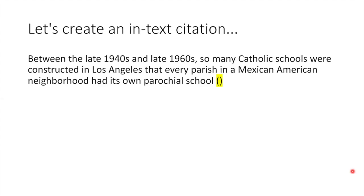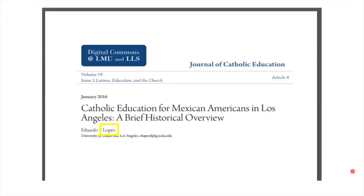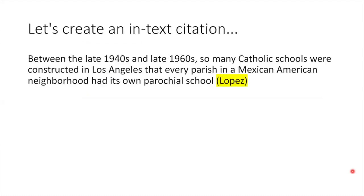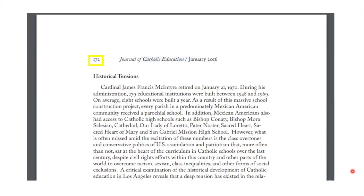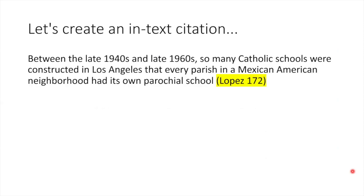The first element of my in-text citation is a pair of parentheses. Next, I'll need the last name of the article's author. I see here that the article was written by Eduardo Lopez. So I can go ahead and enter Lopez inside the parentheses. Next, I'll need the page number. As you'll recall, I found this information on page 172 of the article. I'll add 172 inside the parentheses after Lopez. Finally, I'll end the sentence with a period outside of the parentheses. My in-text citation is now complete and correct.